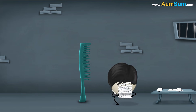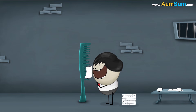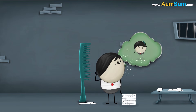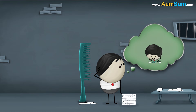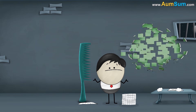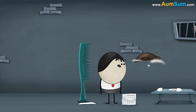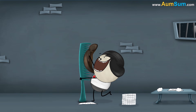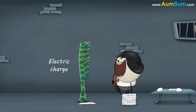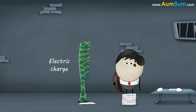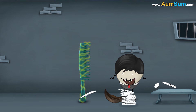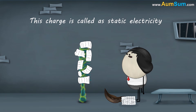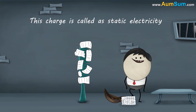Hence, it did not have the ability to exert a force and attract the pieces of paper. So, after rubbing the plastic comb on our dry hair, when it gained an electric charge, it got the ability to exert a force on the pieces of paper and attract them. This charge is called static electricity.